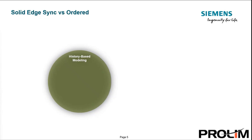Solid Edge has been around for a long time, and in some areas it does look and feel just like a lot of other CAD packages. But there is a real differentiator built into Solid Edge, and that's synchronous technology. We're all familiar with the traditional modeling approaches. The most common types of CAD systems use what's called history-based modeling. Because it's dimension-driven, can be highly automated, and is feature-based, Solid Edge has been a history-based modeler for over 20 years now and continues to provide this method.